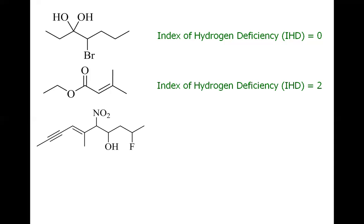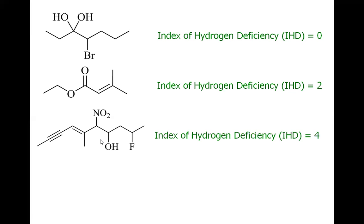For the third molecule, we have a triple bond which gives two IHD, plus one IHD because of a double bond, making a sum of three. But remember, the nitro group also has a double bond between nitrogen and oxygen, so we add one more IHD. Overall, this molecule has four IHDs.